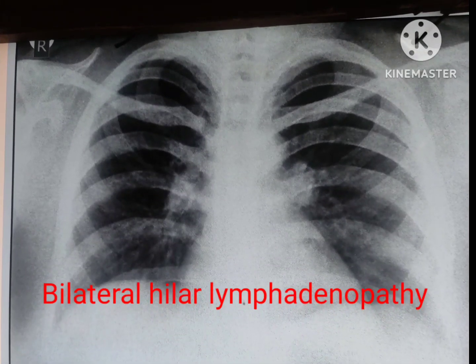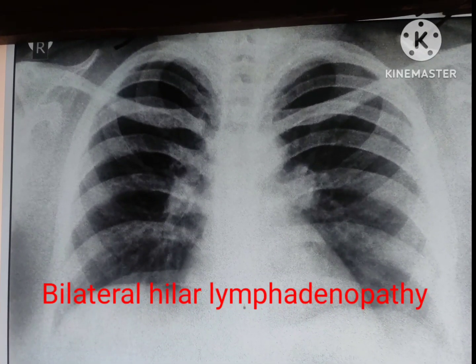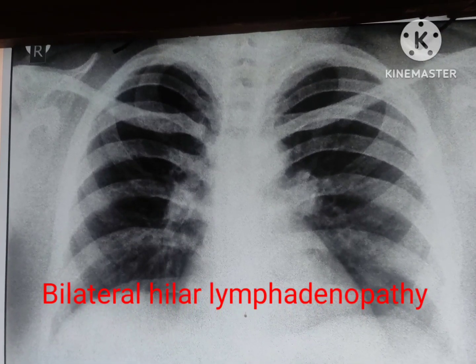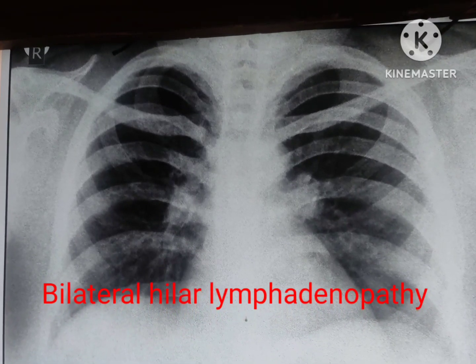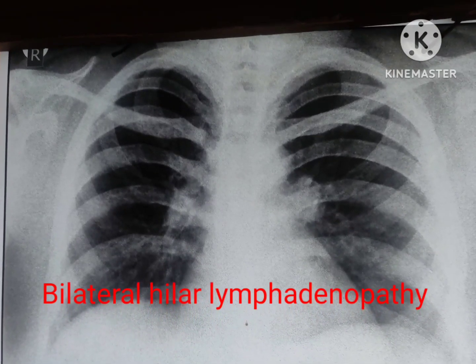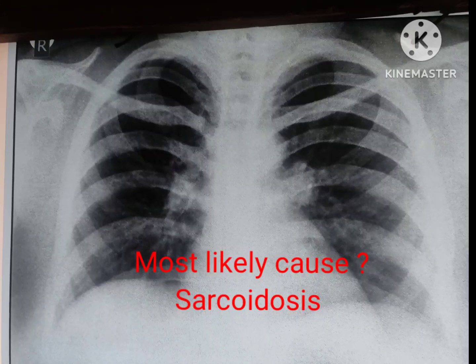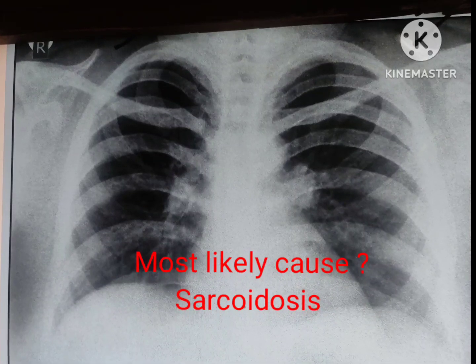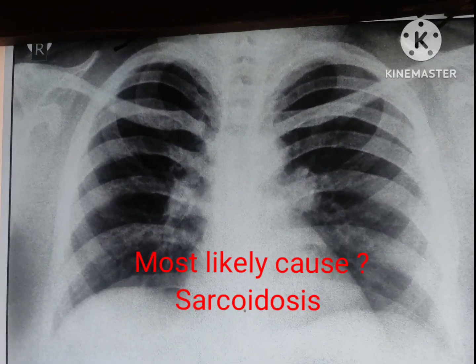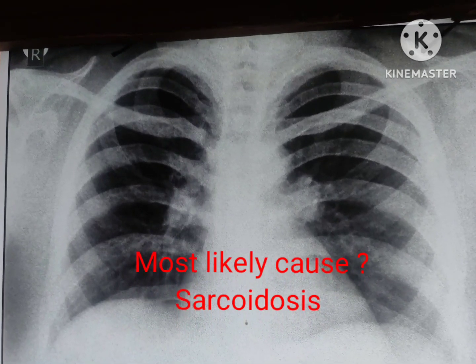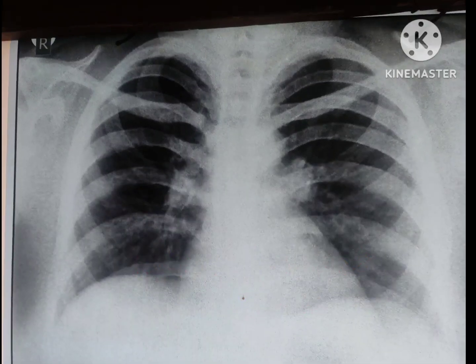The findings of the chest X-ray is bilateral hilar lymphadenopathy. The most common cause of the bilateral lymphadenopathy is sarcoidosis, although it is also found in case of tuberculosis and malignancy.